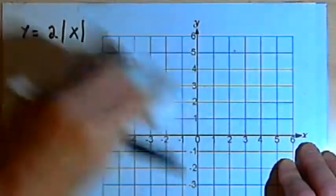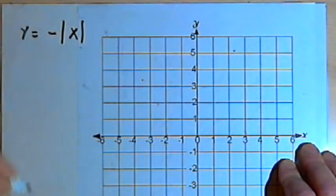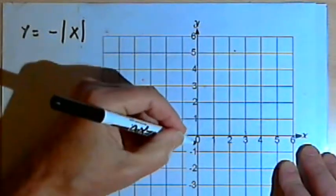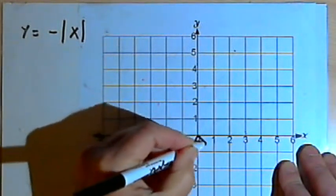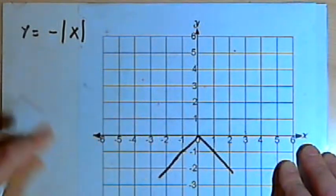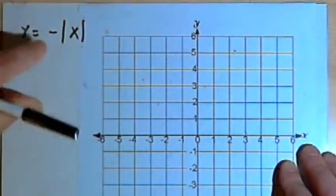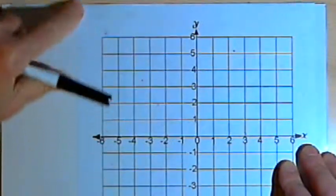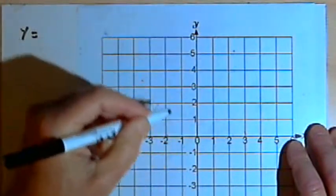If we put a negative sign in front of the absolute value, the graph is going to turn downward. It will still have its point at the origin. So if you're dealing with some basic transformations, just one transformation or one operation at a time, you can probably sketch this out fairly easily.